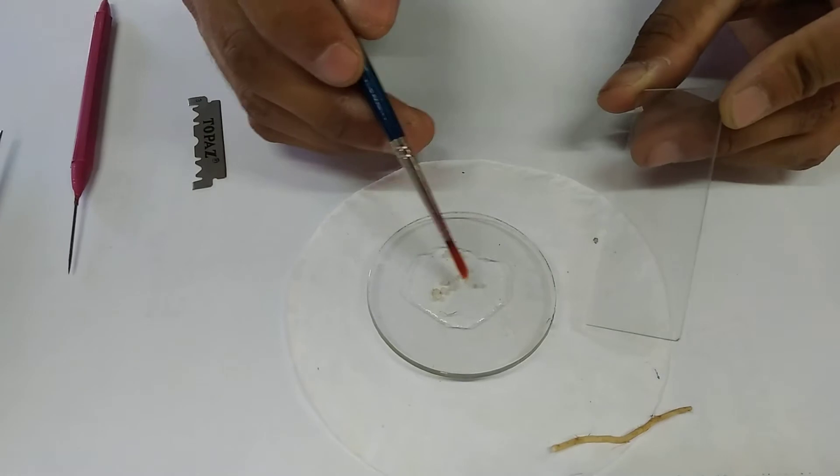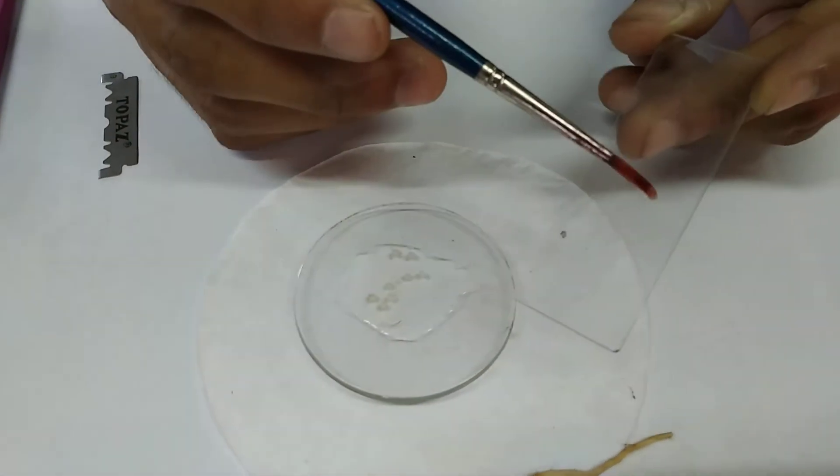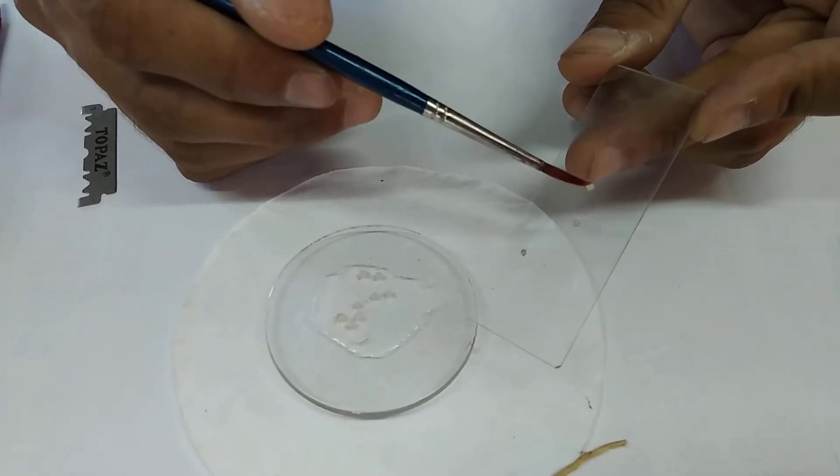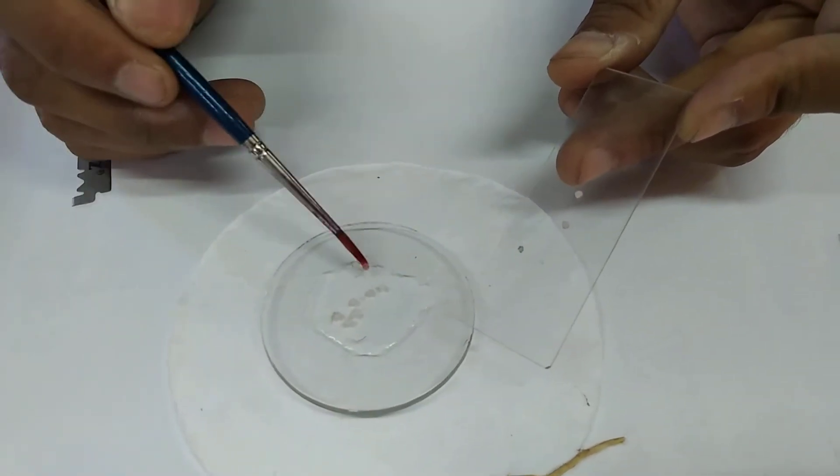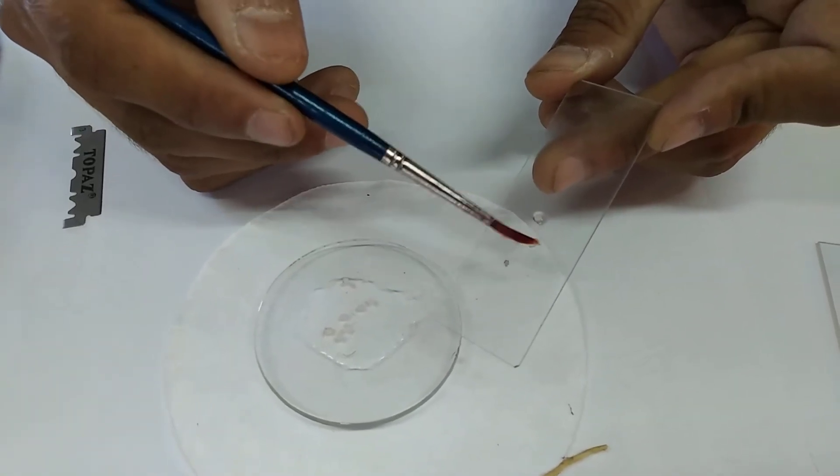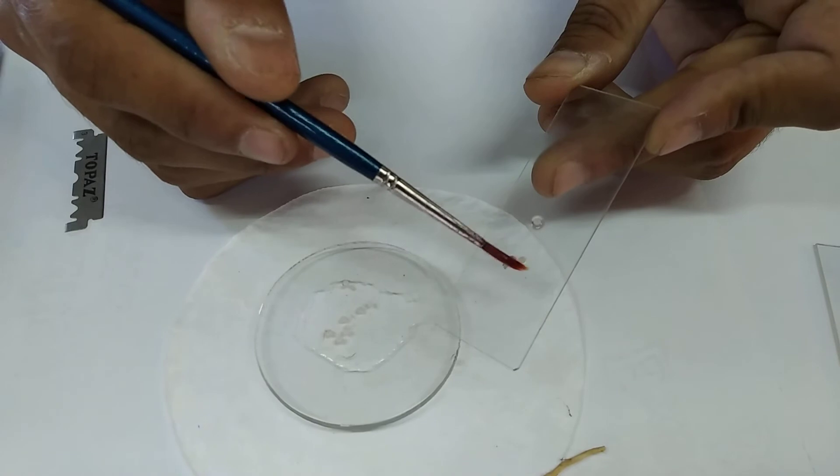After cutting many sections, select the thinnest one and with the help of a brush transfer it to a glass slide. Take two to three sections and make sure the sections you select are very thin.